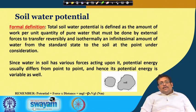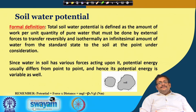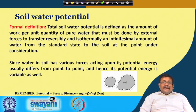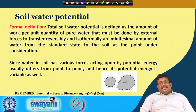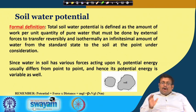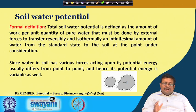The formal definition: total soil water potential is defined as the amount of work per unit quantity of pure water that must be done by external forces to transfer reversibly and isothermally an infinitesimal amount of water from the standard state to the soil at the point under consideration. Since water in soil has various forces acting upon it, potential energy usually differs from point to point, and hence it is variable. This variable potential energy is the driving force through which water moves from one portion of soil to another.